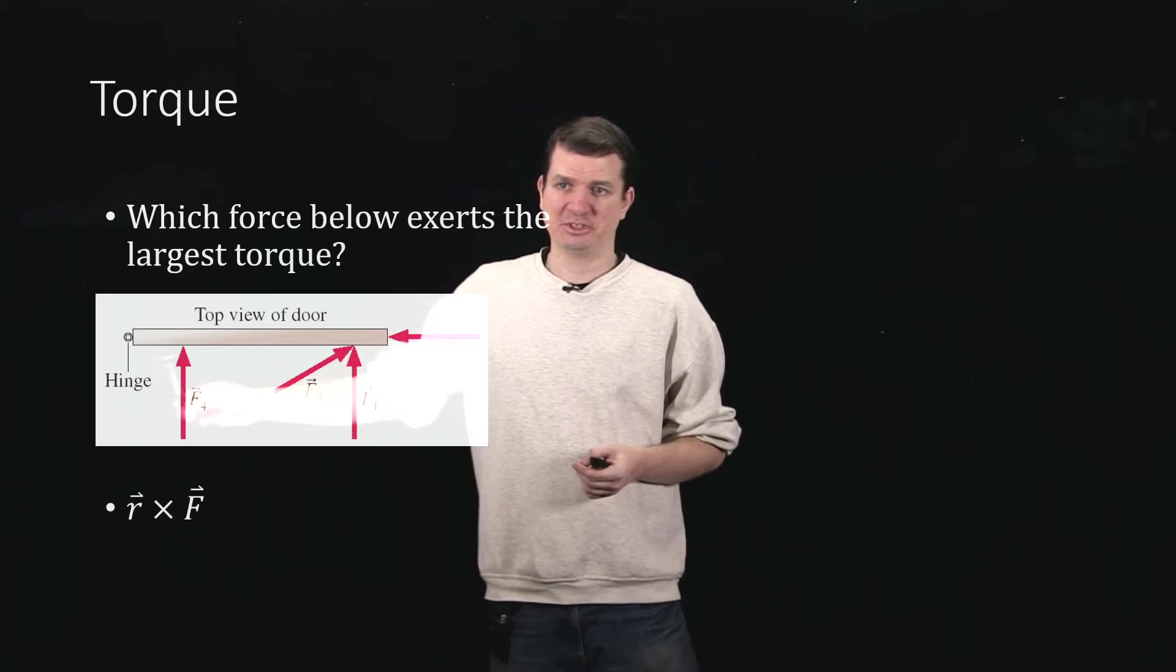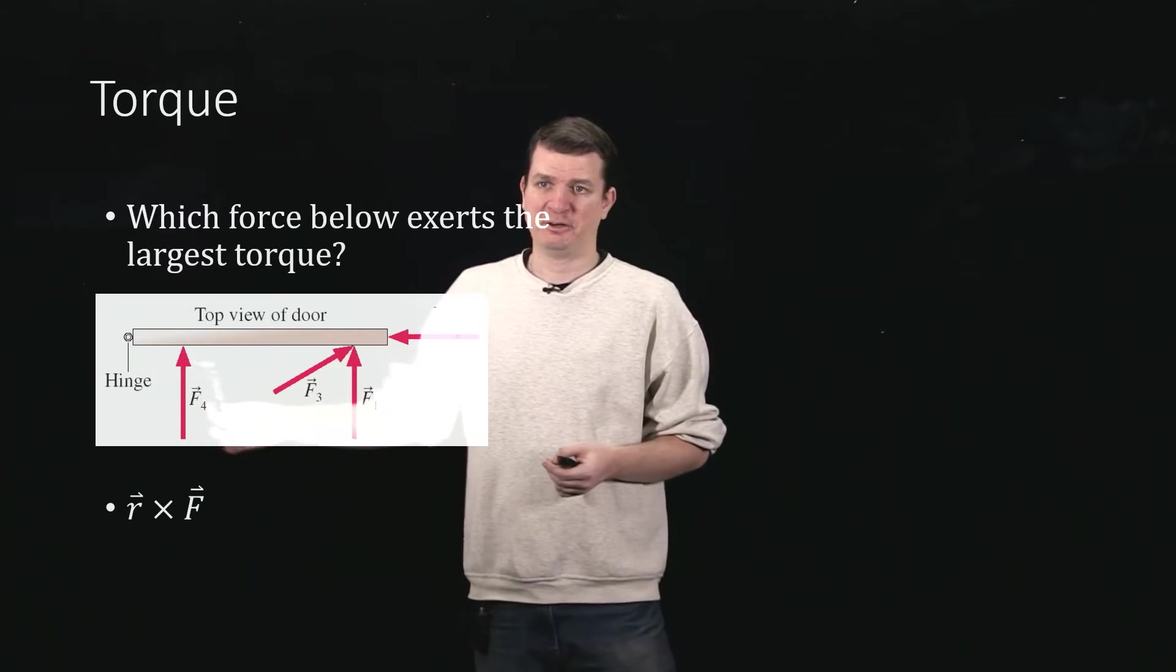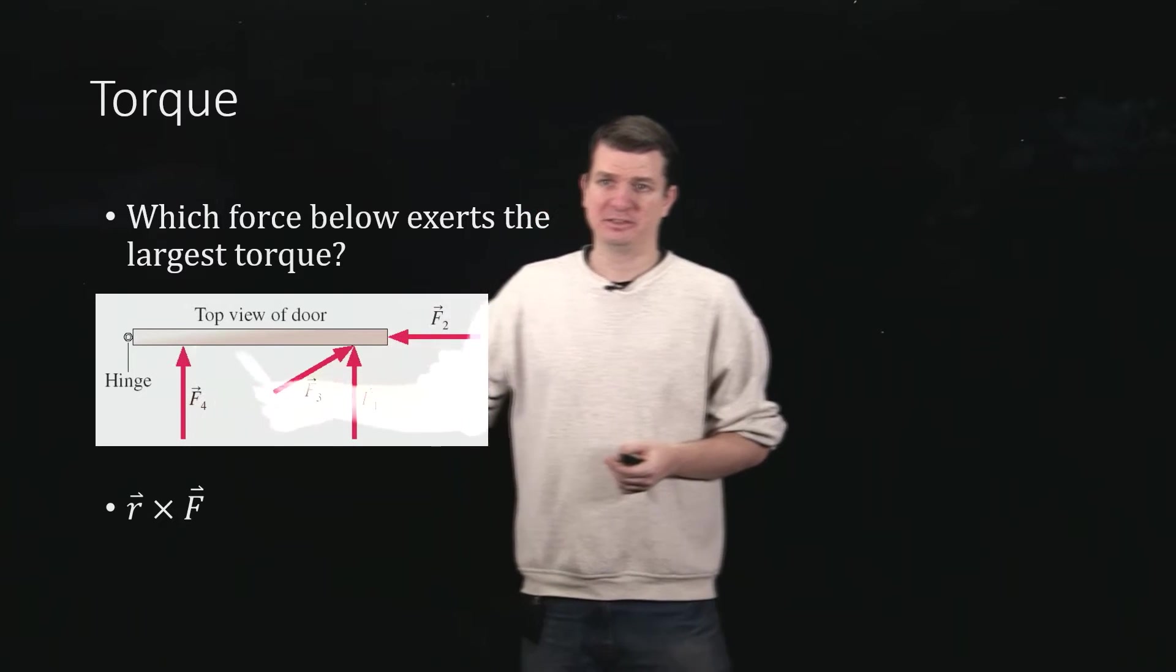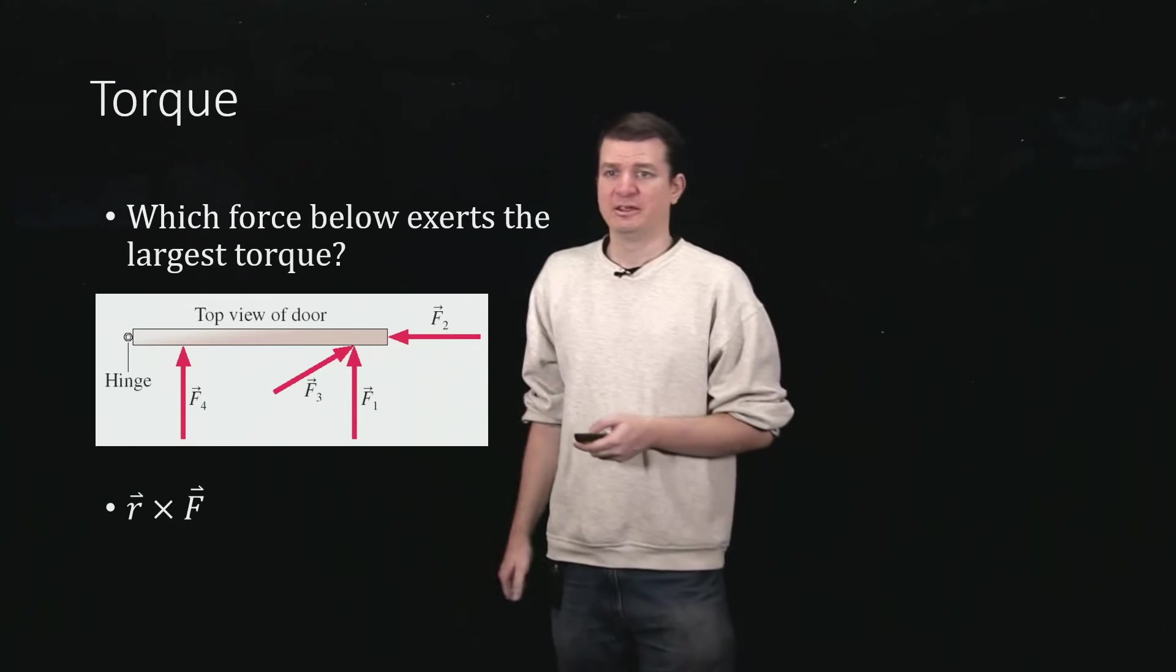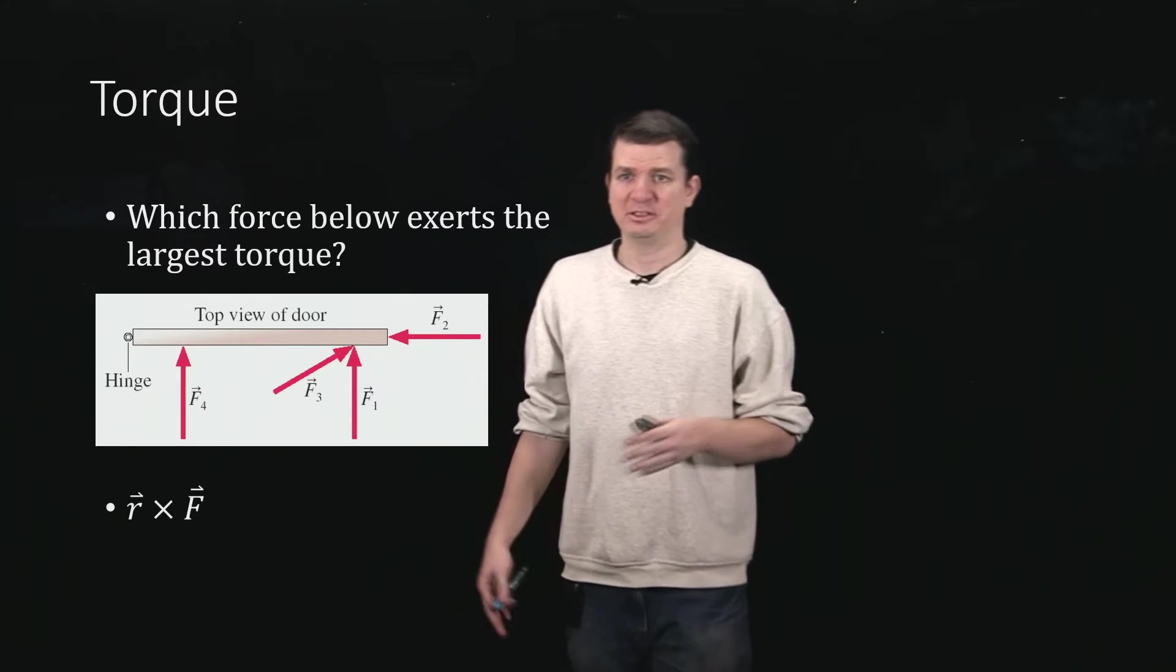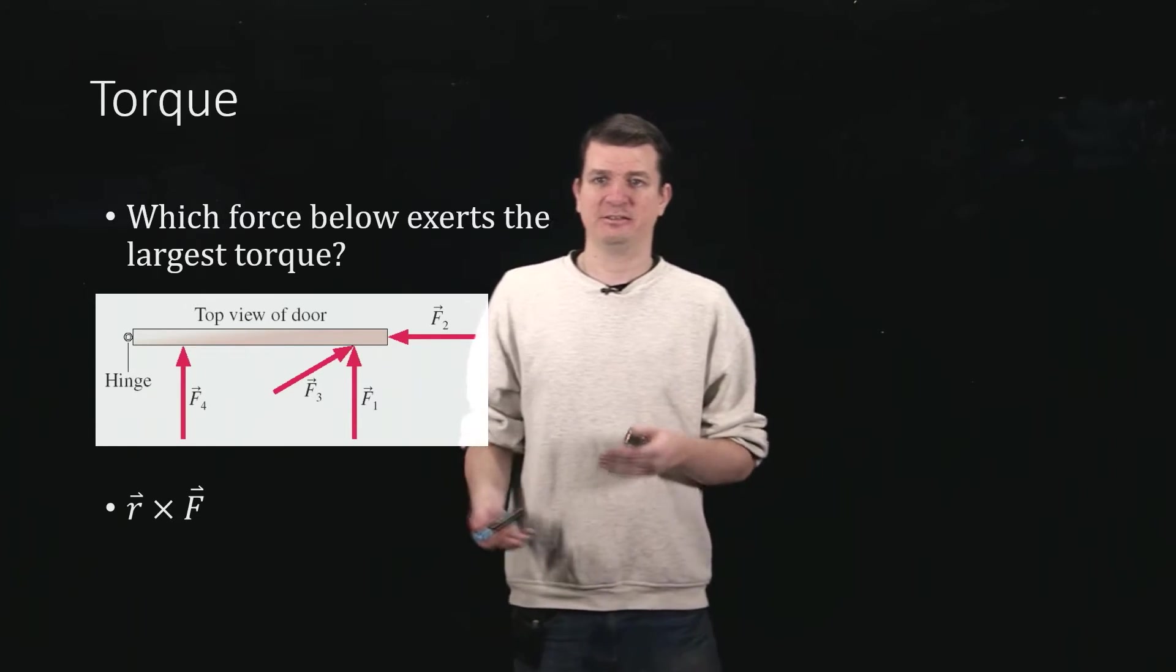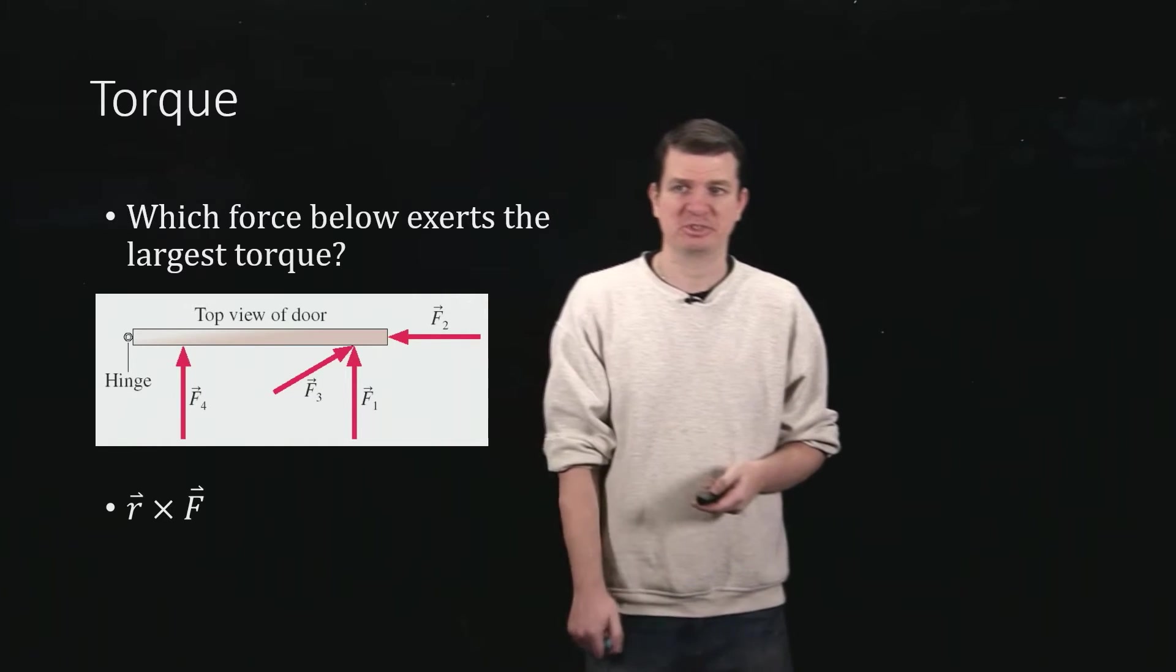The radius is this short distance here, just to the arrow, whereas for the second one acting perpendicular to the door, that distance is a much larger distance. So indeed r cross F agrees with what we said in our simple intuitive description of what's going on.